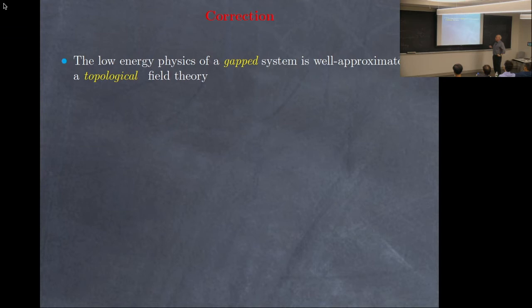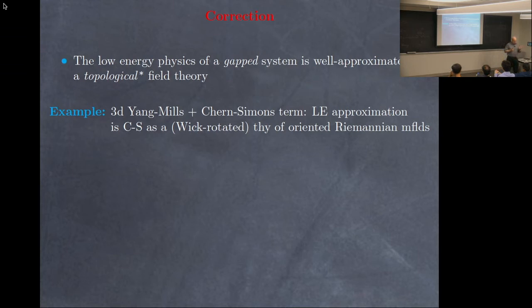Now let's come back to the second of the two general principles: that a gapped system is approximated at low energies by a topological field theory. That's not always true — we might need an asterisk. The example is the kind of thing that occurred in Zohar's talk this morning.